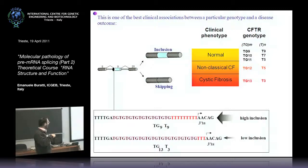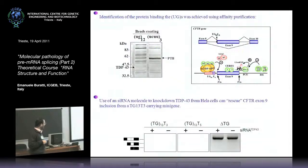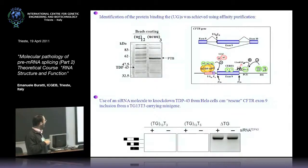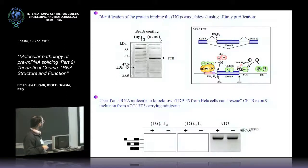Those, like most of us, who have a high number of Ts and a small number of TGs will be normal because they can make enough full-length CFTR protein. I was a postdoc in Tito Baralle's lab and my task was to find the proteins binding to this motif. I did quite a lot of RNA affinity purification, and in 2001 I managed to identify TDP-43.